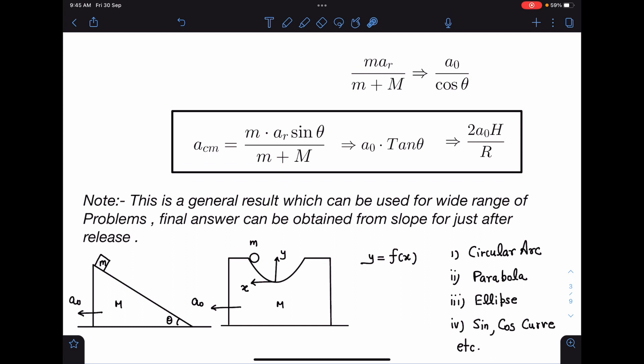But maybe we can take a circular arc, that is what I have written. Parabola case we have discussed. It could be an ellipse, it could be some sine cosine curve, or it can be any other curve.